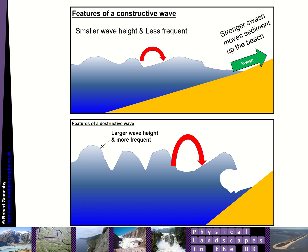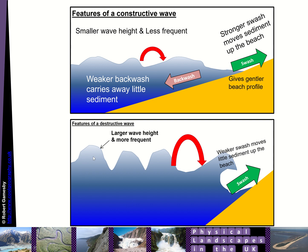So the two types of waves that we get: a constructive wave, which we saw there, those would have a smaller wave height, be less frequent. A stronger swash movement up the beach, more sediment goes up than back down. We get a gentle beach profile with those types of waves.